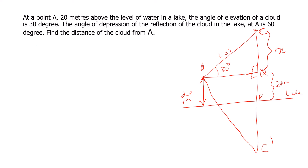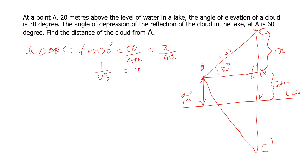In triangle AQC, taking tan 30 equals opposite by adjacent, we get tan 30 equals CQ by AQ. Since CQ equals x and tan 30 is 1 by root 3, we have AQ equals x root 3. This is equation 1.